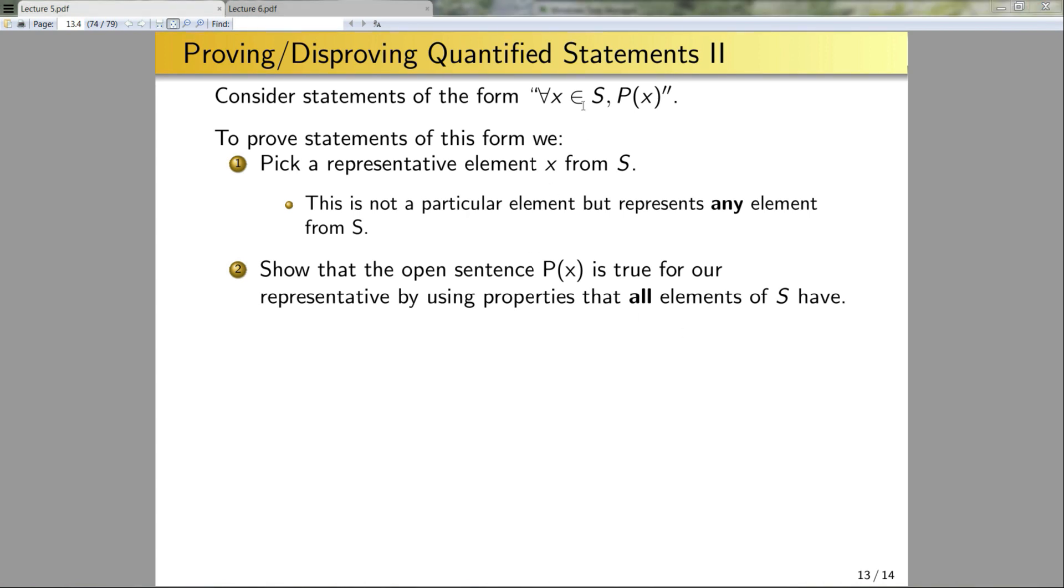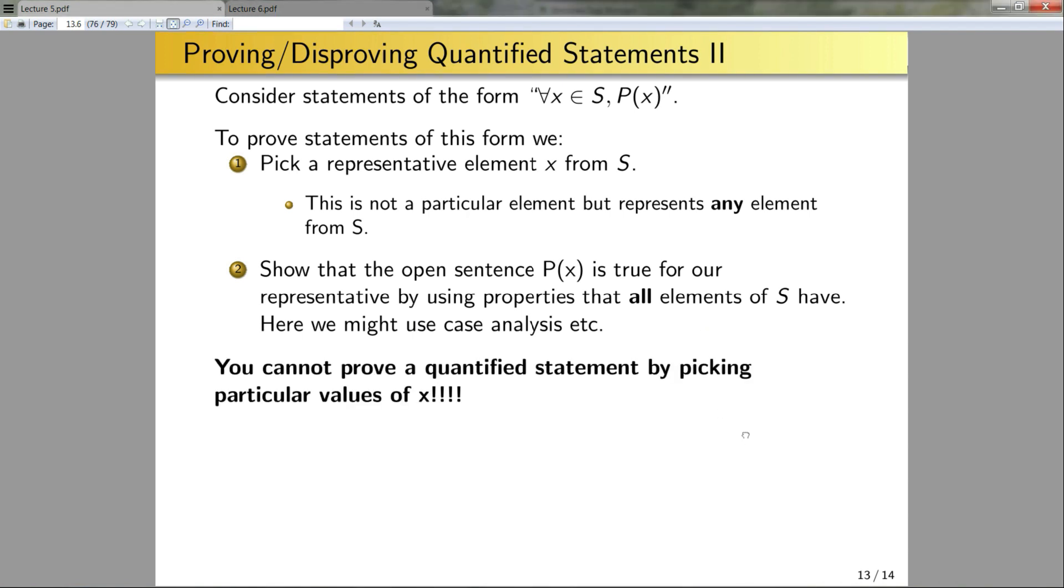So for instance, if x was, say, an odd integer, I could pick an arbitrary odd integer. And then I could use the property that x would be, say, equal to 2n plus 1 for some integer n. And I would use that fact to prove the proposition. So I've already done this in a few of the examples. So a good exercise would be to go back, look at those examples, and verify that, hey, yeah, that's what he did. So here, in proving these statements, I might use case analysis or many of the other techniques that I discussed before. So in conclusion, you cannot prove a quantified statement by finding a particular value for x. It needs to be true for all of the values of x, thus why we say for all, right?